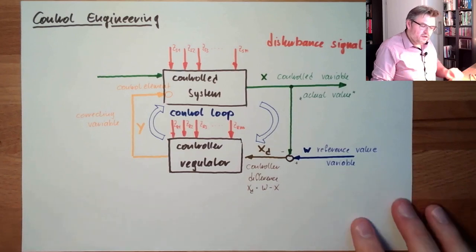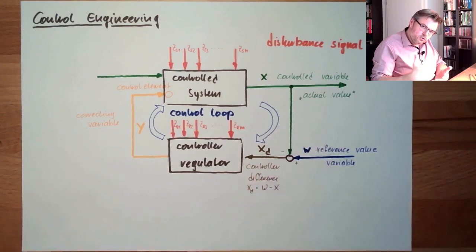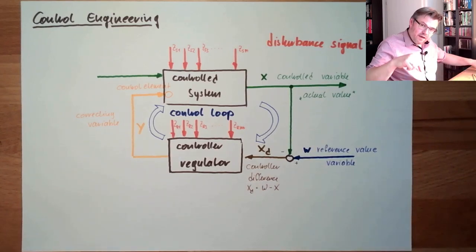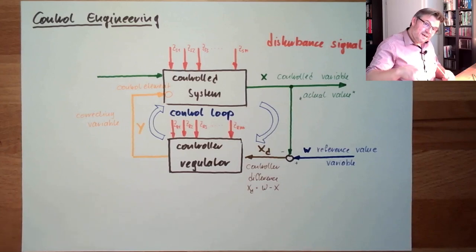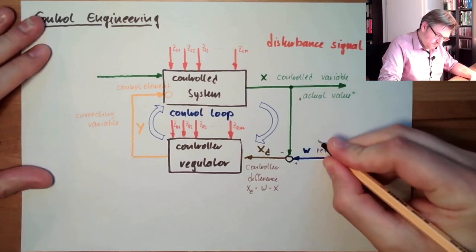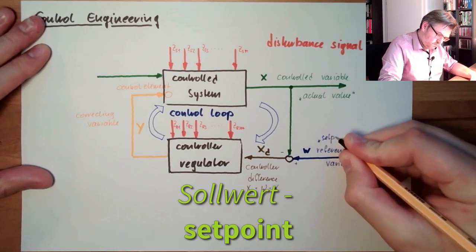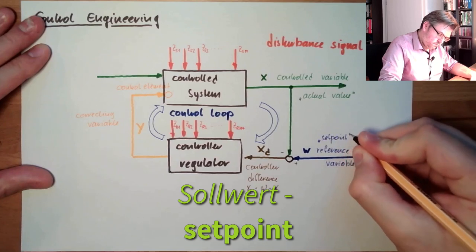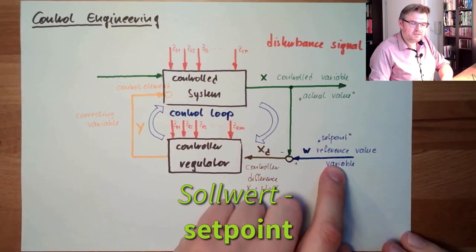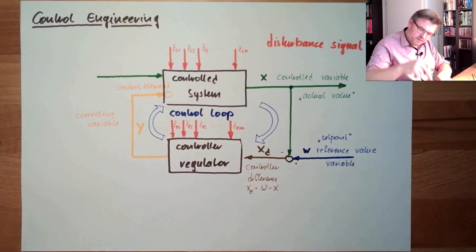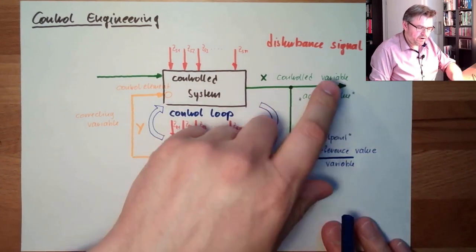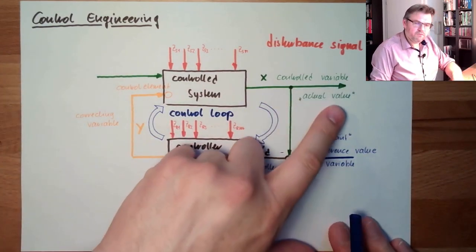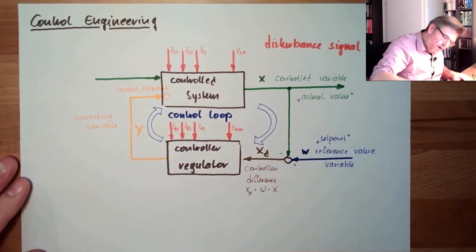There is also the reference variable. The reference variable is also a continuous variable which is changing over time, and the representation of the reference variable right now is called the setpoint. So the reference variable is the signal, and the setpoint is the value of the signal right now. Similarly, the controlled variable is the signal, and the actual value is the value of the signal right now.